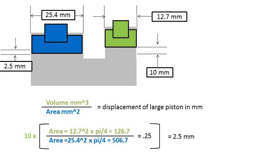In this example it results in a stroke distance at the large piston of 2.5mm. So the displacement is reduced to a quarter of the small piston's displacement.